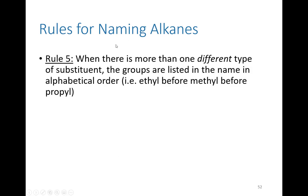Rule five: if there is more than one different type of substituent, list the groups alphabetically. Ethyl comes before methyl alphabetically, so ethyl always goes first in that case. Between propyl and methyl, methyl comes first alphabetically. Also note that if something is dimethyl, it still counts as beginning with M — we ignore the prefix "di" for alphabetization. Dimethyl is M, dipropyl counts as P. And "iso" always begins with I.